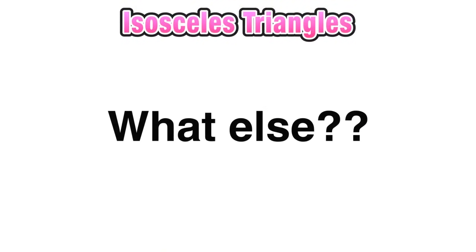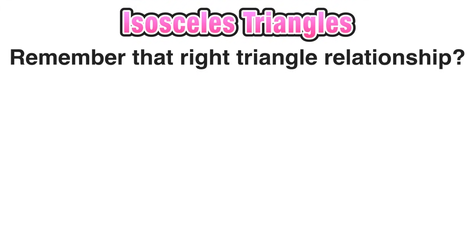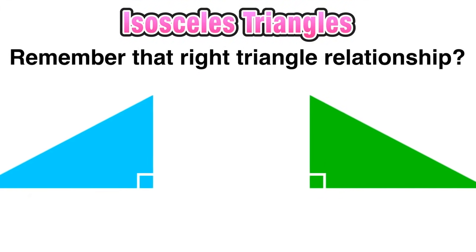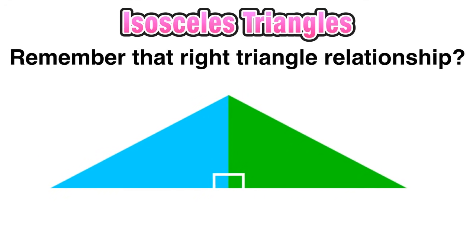Now that we're more comfortable with the basic definition and image of your typical isosceles triangle, let's look at what else we should know. This is where we go back to that right triangle relationship we explored earlier — where we looked at an isosceles triangle as two congruent right triangles back to back, reflected over a vertical line.